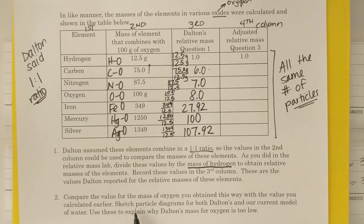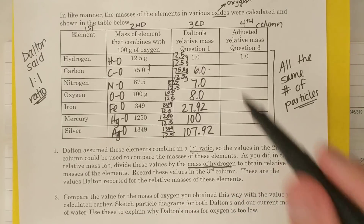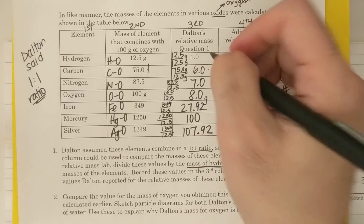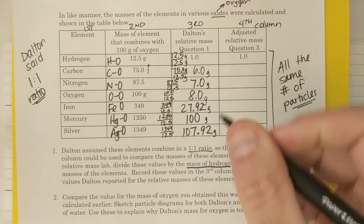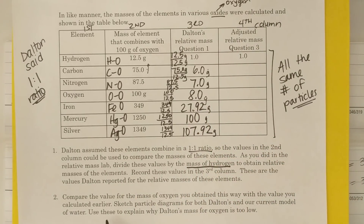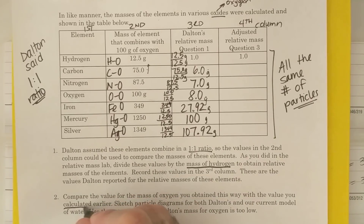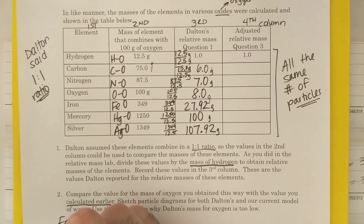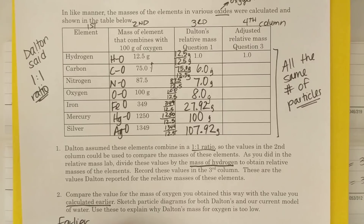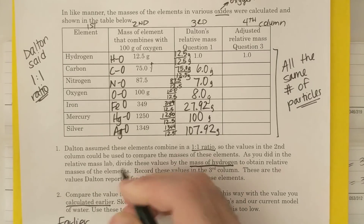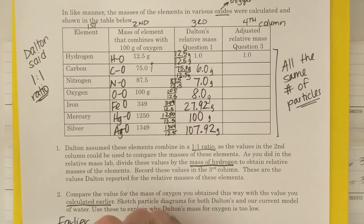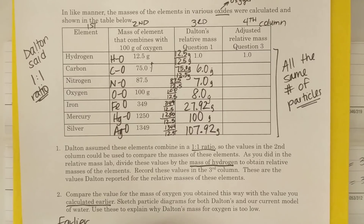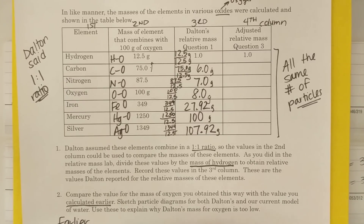Number two asks: compare the value for the mass of oxygen you obtained this way — which is 8 — with the value calculated earlier. Earlier, we said that if I had 1 gram of hydrogen, I'd have 16 grams of oxygen, because oxygen was 16 times greater than hydrogen. So Dalton's method gives 8, while the density method gives 16.